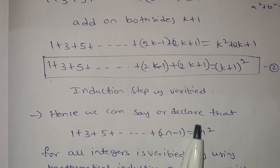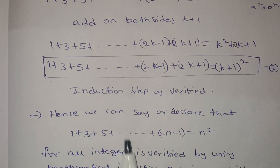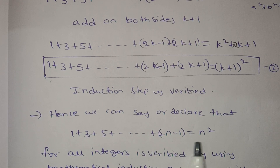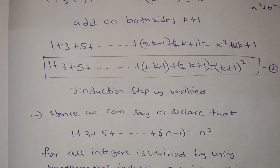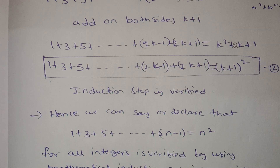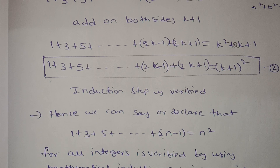So here we can declare that 1 plus 3 plus 5 plus up to (2n minus 1) equals n squared for all positive integers, verified by using mathematical induction principles — both the base step and the induction step.